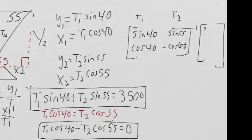So our solution matrix is 3,500 and then zero. And those numbers just come from right here. 3,500 and zero.